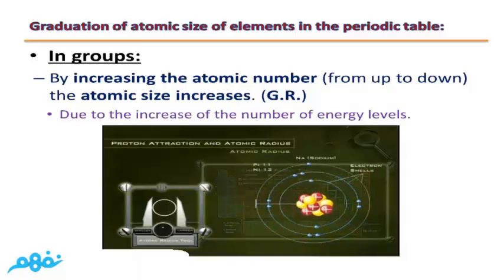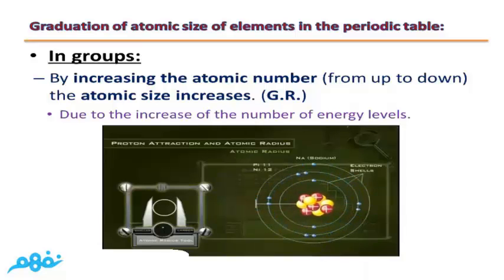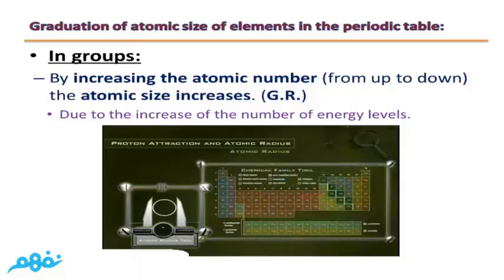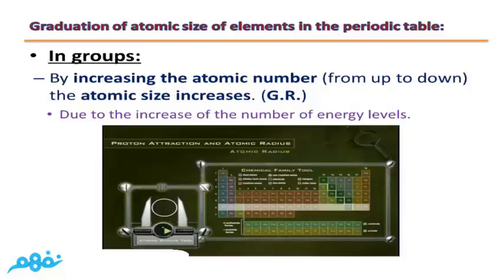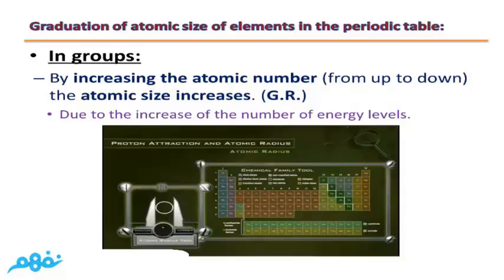As you can see, if we take the sodium atom as an example, the sodium atom contains three energy levels. The element below it in the modern periodic table is potassium, which contains four energy levels. So, as the atomic number increases in groups, the number of energy levels increases, and thus the atomic size of the atom increases.